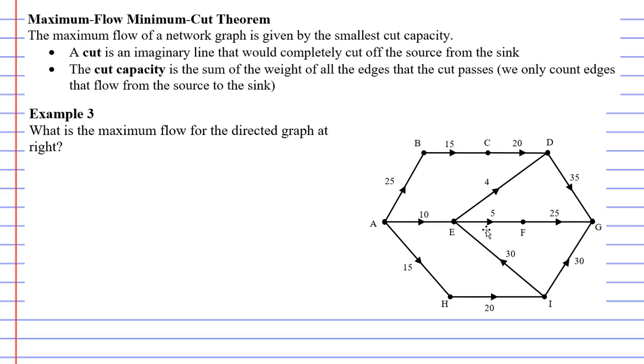Now, in order to make some cuts, we need to know where the source is and where the sink is. And this is my fault. I should have written down where they were. So A is our source and G is our sink.